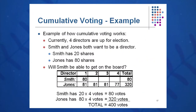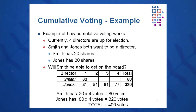Knowing that Smith has 80 votes, Jones will use 81 of his votes on every one of the positions, leaving him only 77. In this case, Smith would win a seat on the board 80 to 77. However, if Jones wants to cause confusion, he could split his 320 votes evenly as 80-80-80-80, creating a four-way tie. But to guarantee a win, you need 81 votes — that's what this calculation gives you.